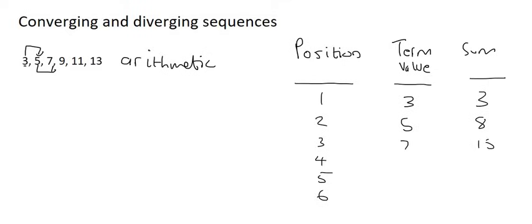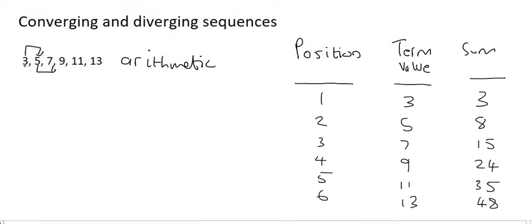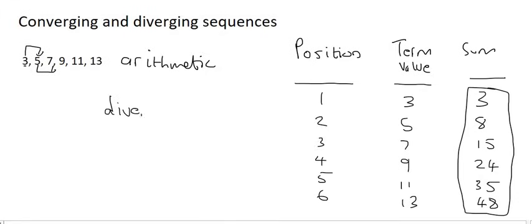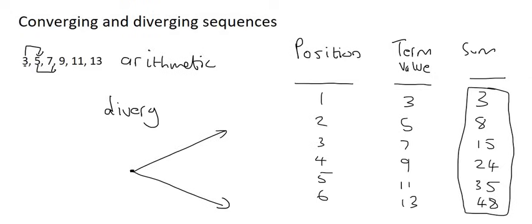Then we have 7, so the sum is 15, and you can see how this just carries on. If we look at the sum column, those numbers just keep getting bigger and bigger — and that is called diverging. Diverging looks like this: you start at a particular point and the numbers just get further and further apart. The sum just grows wider and wider and never gets to one particular value. So that's going to be a diverging pattern.